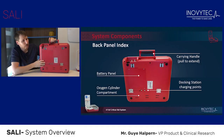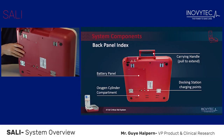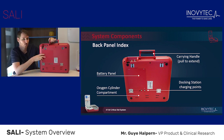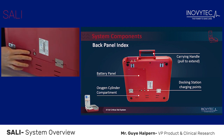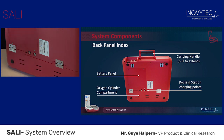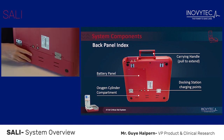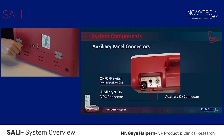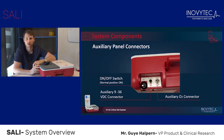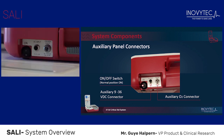The back panel is comprised of the following elements. The first one is the battery panel — inside you will find the rechargeable battery. Next are the two charging points from which the SALI receives its power supply. Next is the oxygen cylinder compartment, where inside you will find the oxygen cylinder. The auxiliary panel is where you will find the on/off switch button, the auxiliary O2 connector, and the auxiliary DC connector.